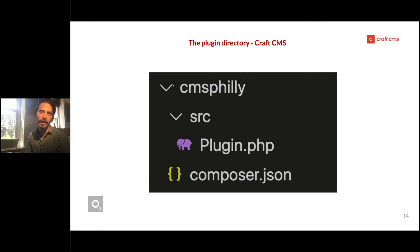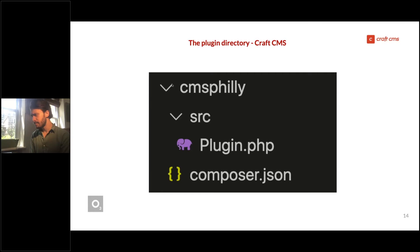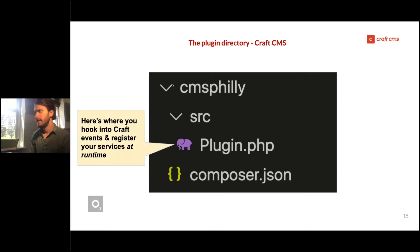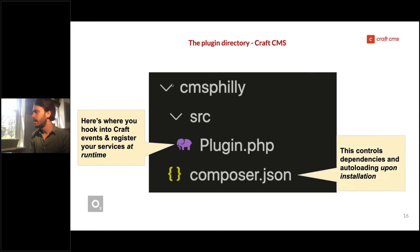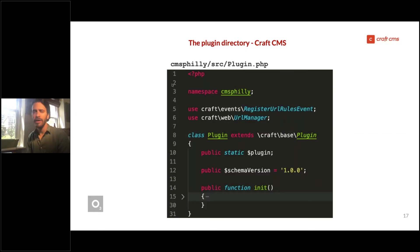Let's look at the plugin directory, starting with Craft. All you need for a working Craft plugin is a plugin folder with a child source folder, and inside that source folder is a PHP file called plugin.php. In the root directory of the plugin folder is composer.json. The plugin.php file is what you need to hook into Craft events and register services at run time, while composer.json controls dependencies and autoloading during installation.